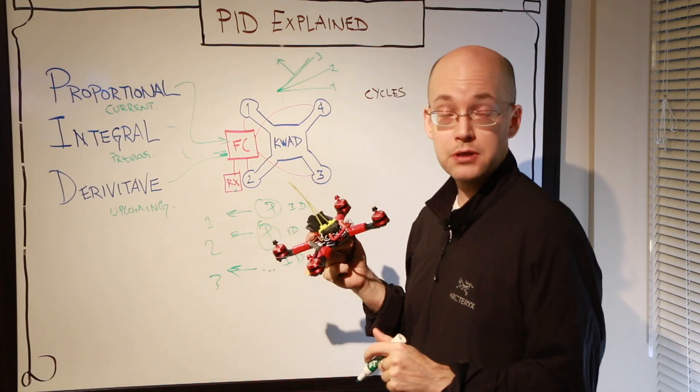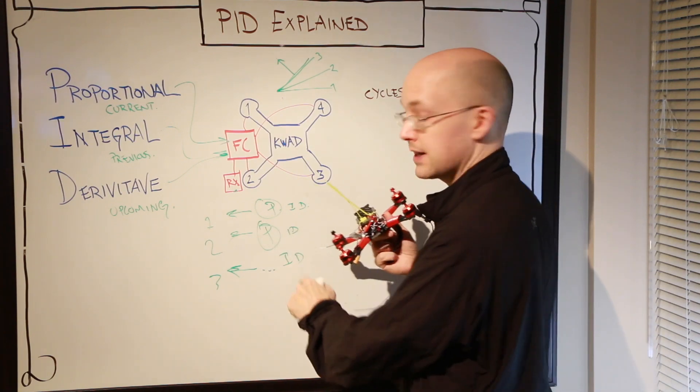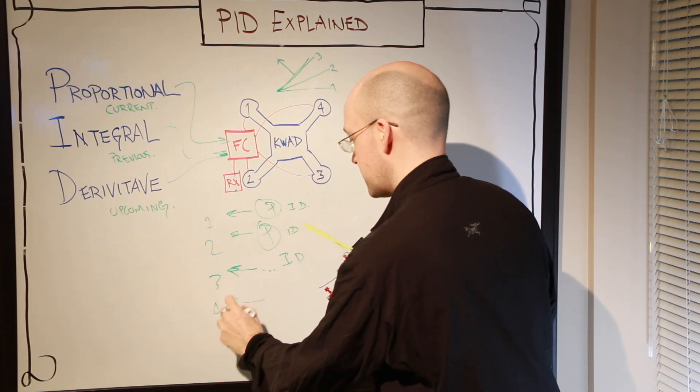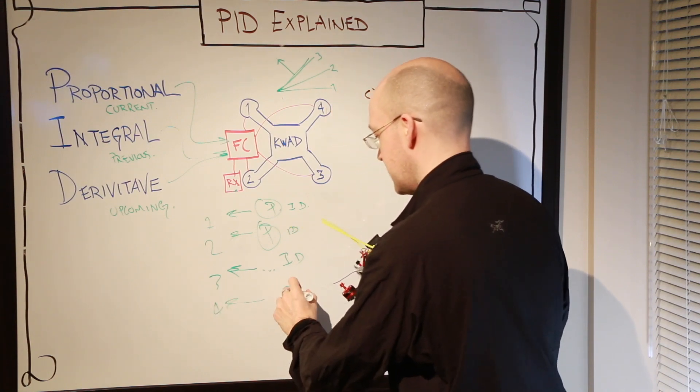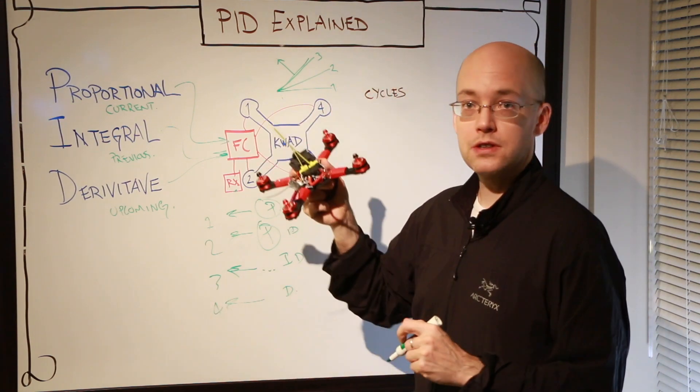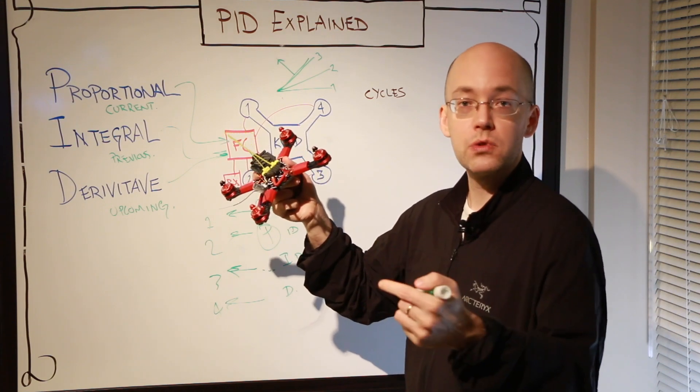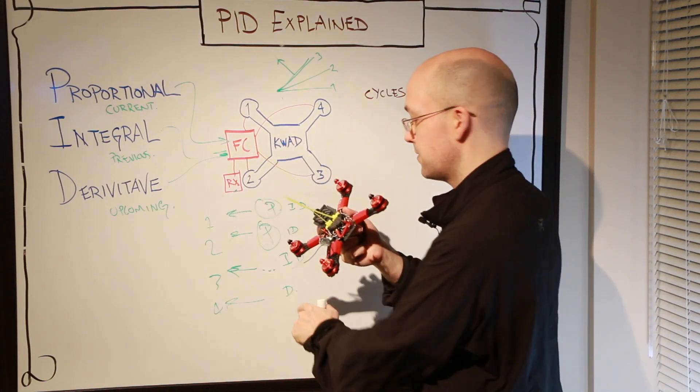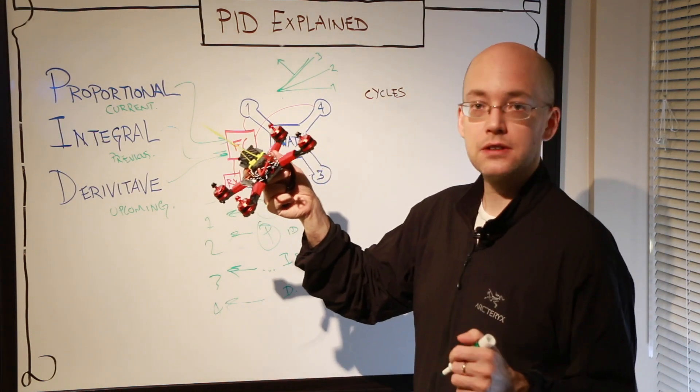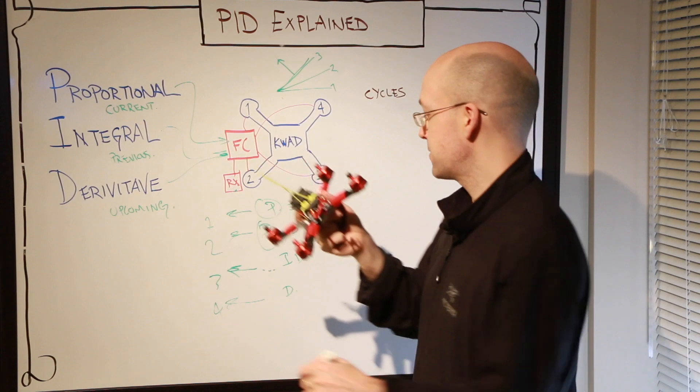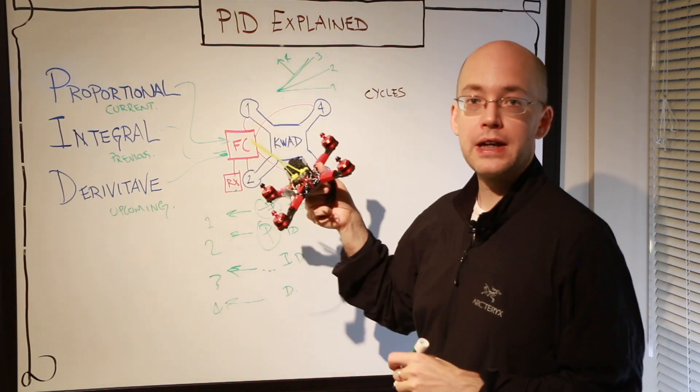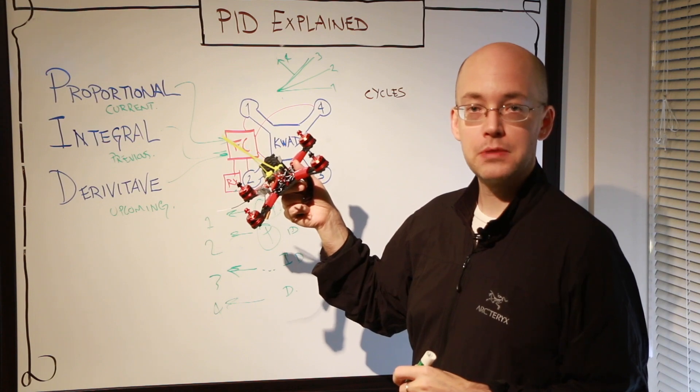But D is going to come into play as well and saying, you know what? I, I can help you out. I'm going to give you a little extra push. So once cycle four comes around, D basically gives us enough correction because it knows what I is going to do. It can predict what P and I are doing, that it can give us just that little bit of correction so that when we hit cycle four, we're bang on exactly where we need to be.